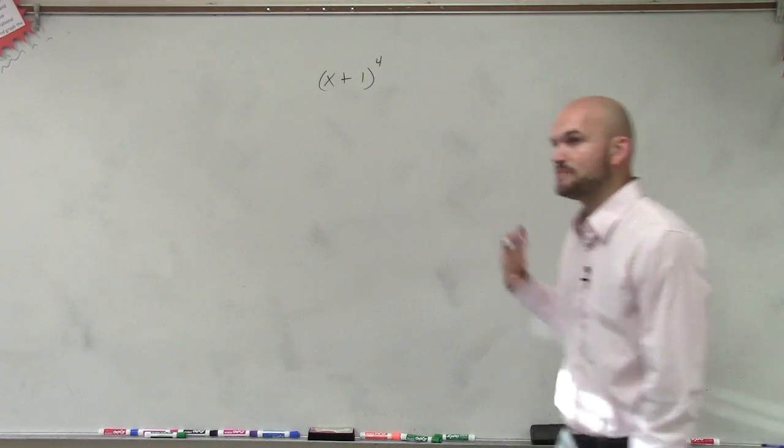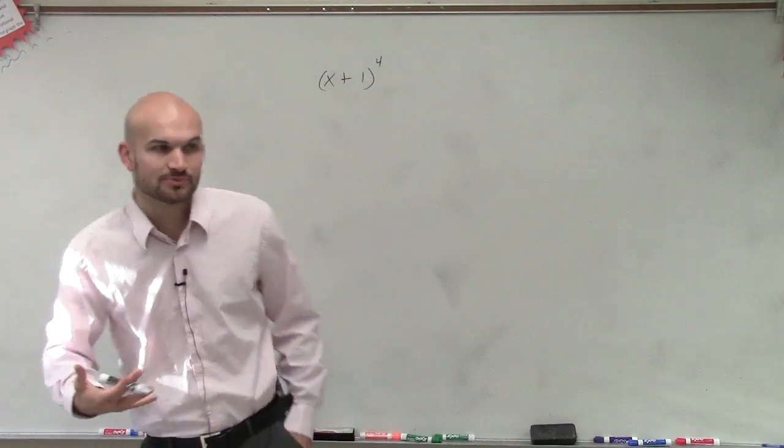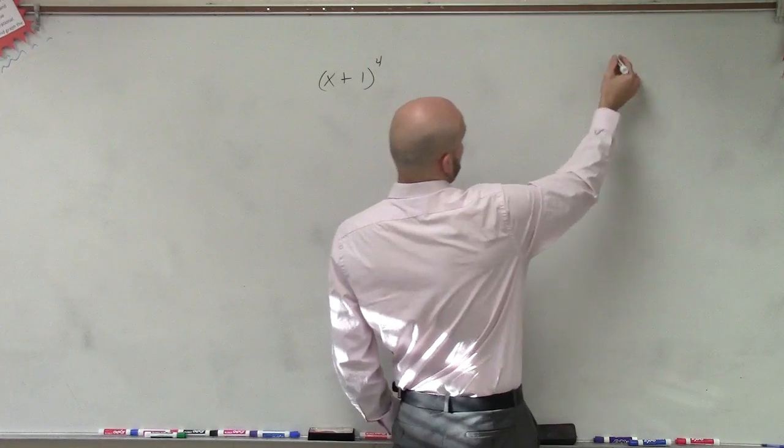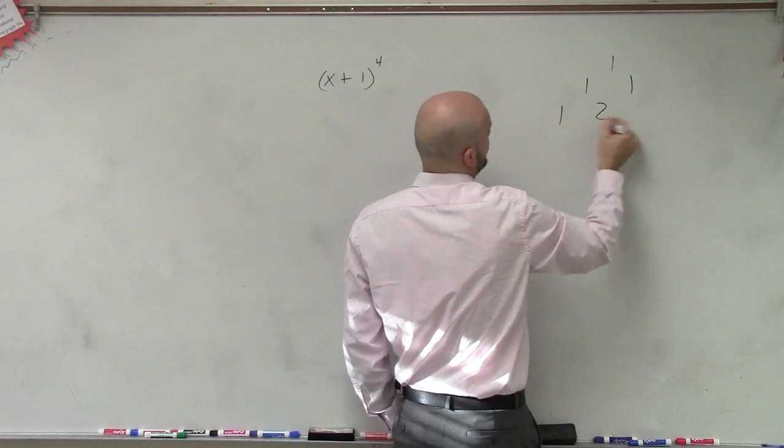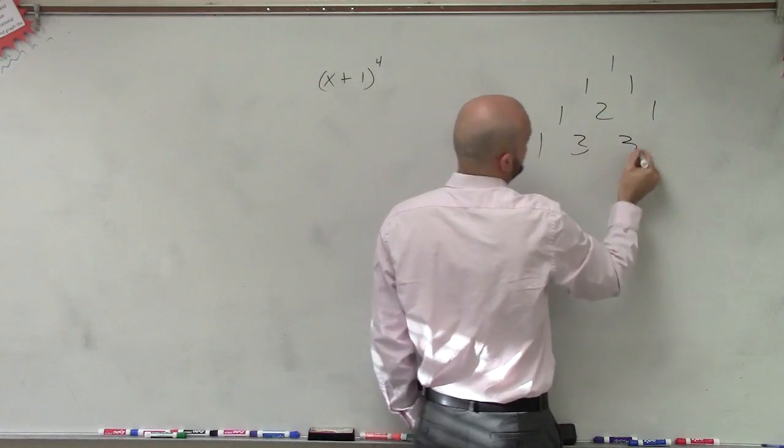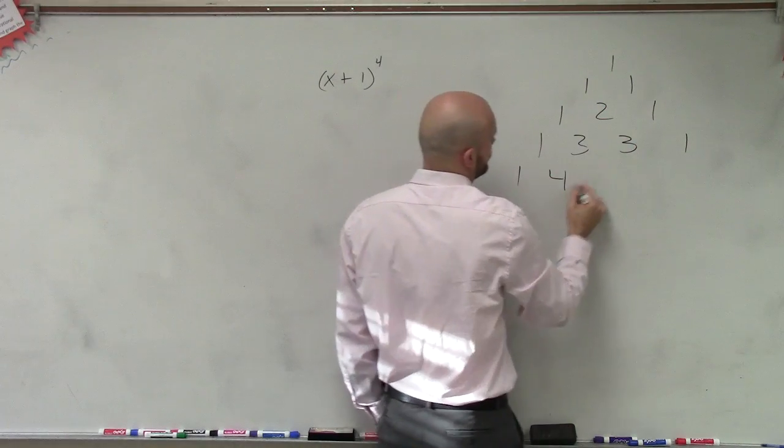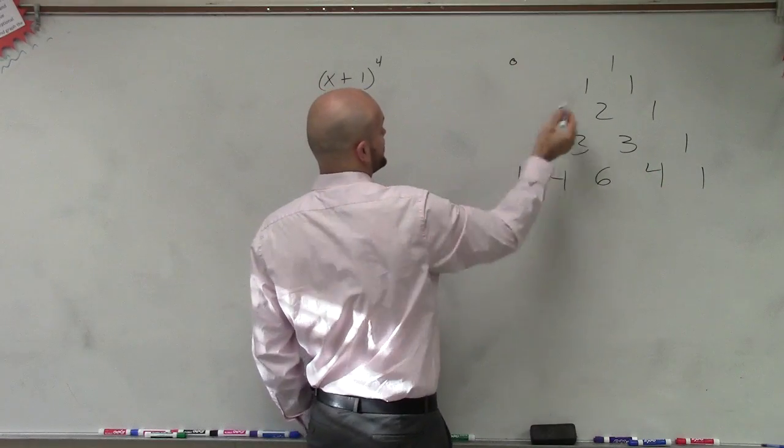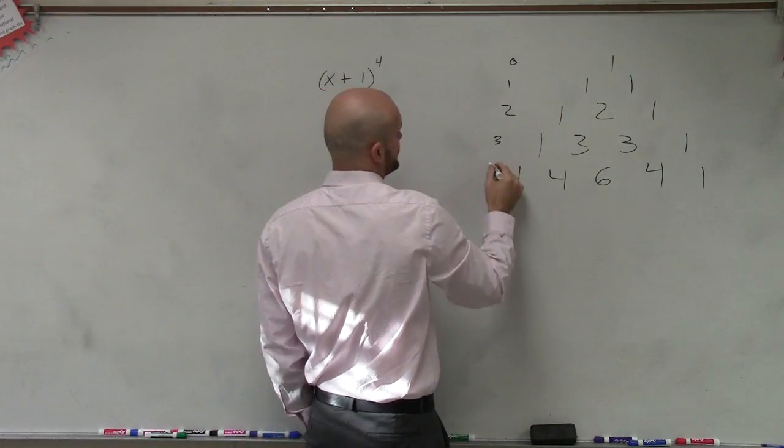And then we also need to make sure that we're going to use Pascal's triangle to make sure what we multiply each coefficient by. So let's write out Pascal's triangle to the fourth degree. So we have 1, 1, 1, 2, 1, 1, 3, 3, 1, 1, 4, 6, 4, 1. So remember, that's to the 0, first degree, second degree, third degree, and fourth degree.